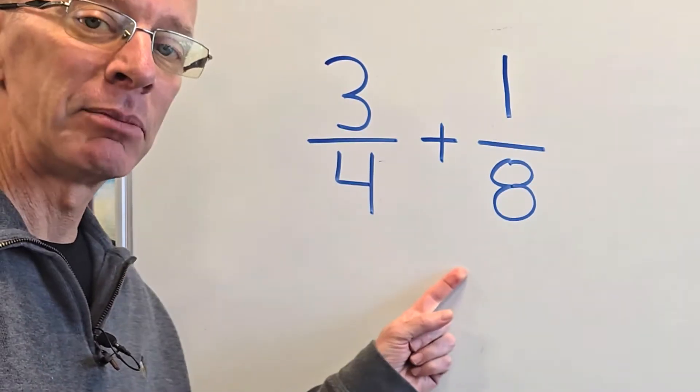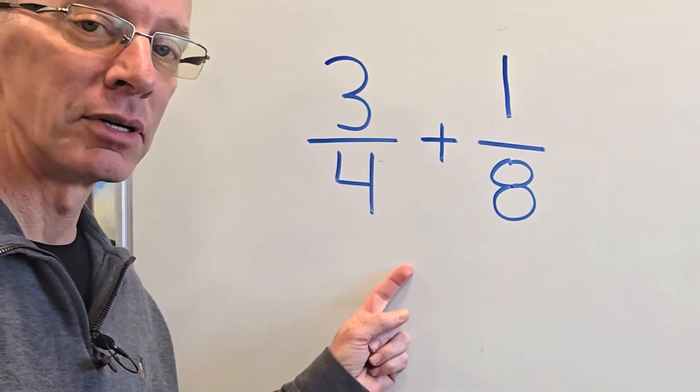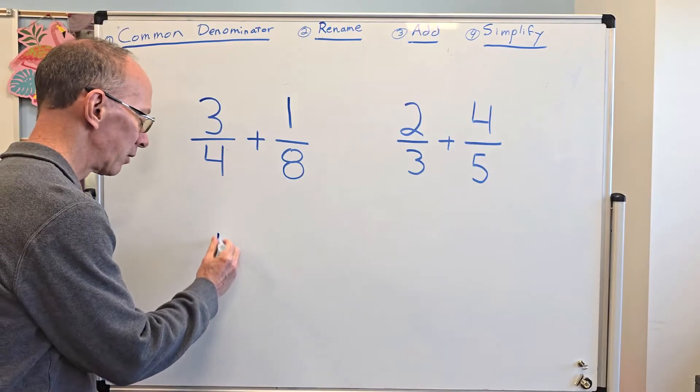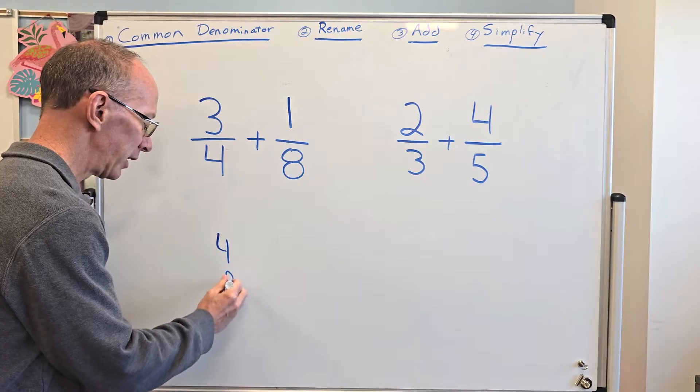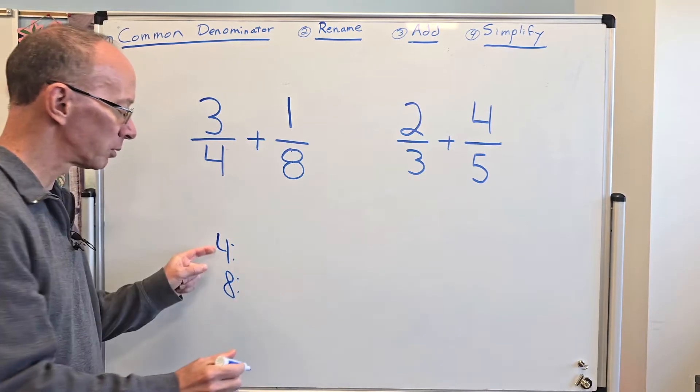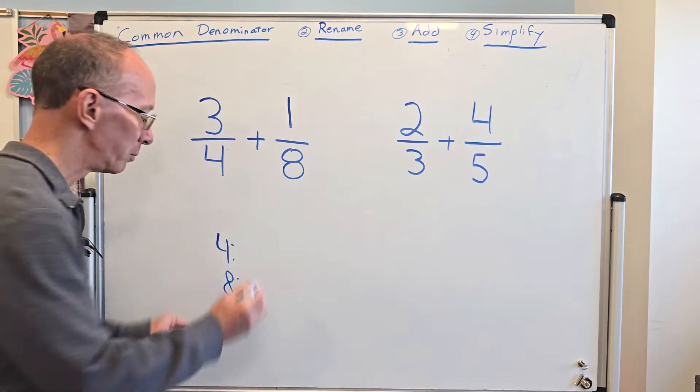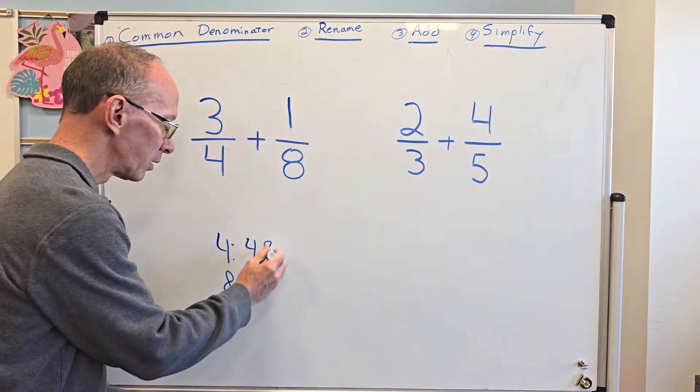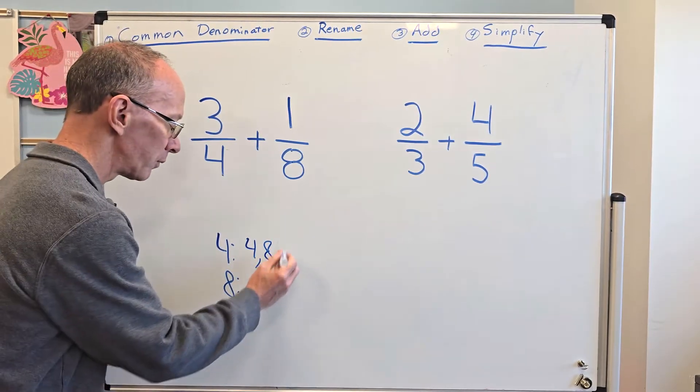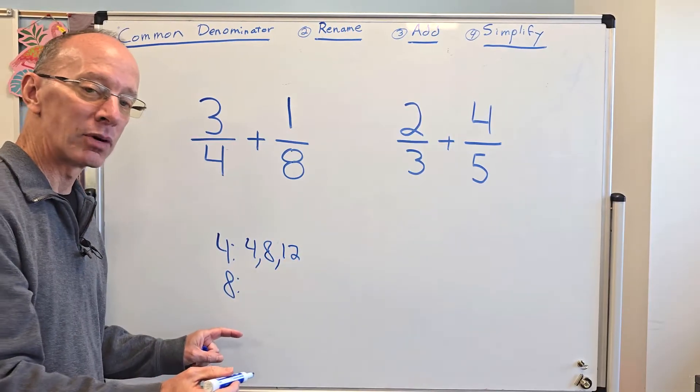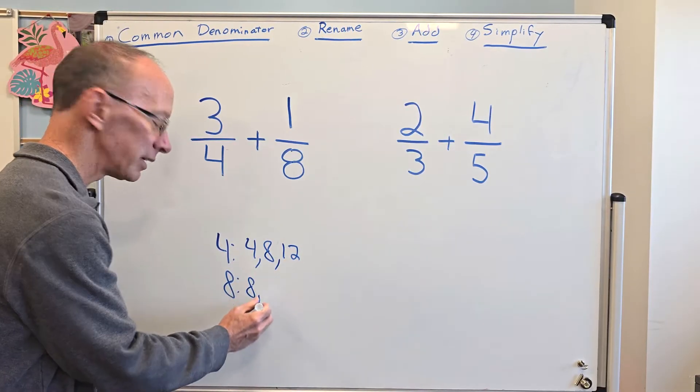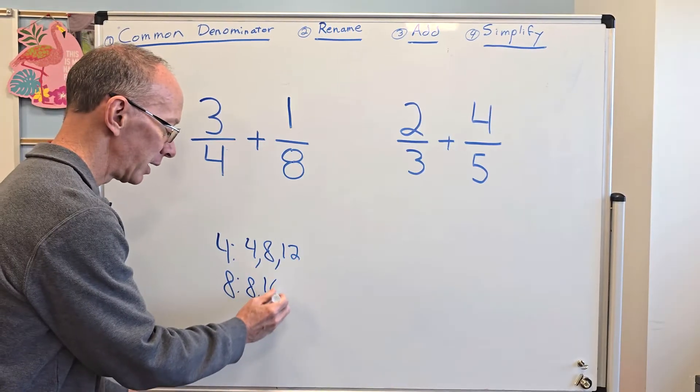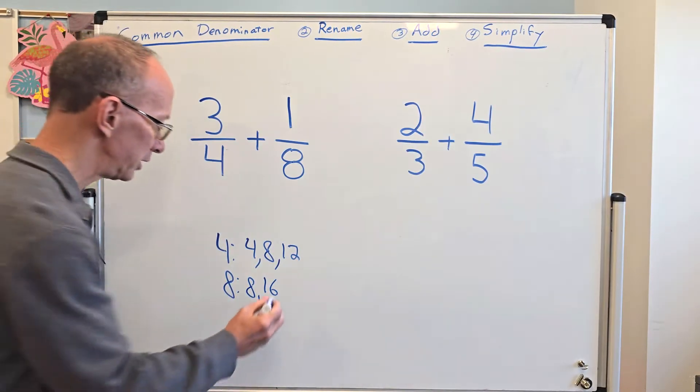So I need to find the least common multiple of both of these numbers. Right now I'm just going to go ahead and put down four right here and eight right here. And then I'm just going to do multiples of four. So four times one would be four, four times two, eight, four times three, 12.